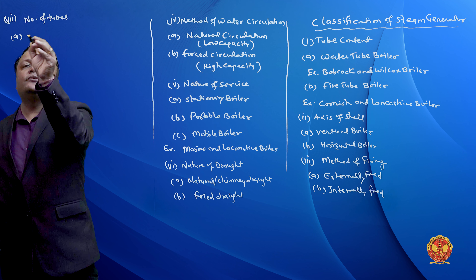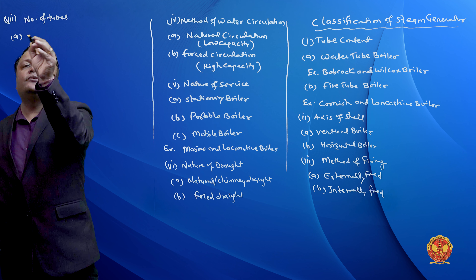The seventh classification is according to the number of tubes. The first type is the single tube boiler, which is a simple vertical boiler. The second type is the multiple tube boiler, where more than one tube is used. Examples of multiple tube boilers include locomotive boilers and Babcock and Wilcox boilers.